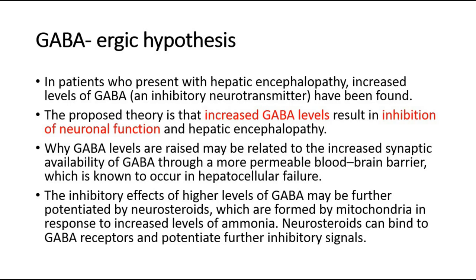Why GABA levels are raised may be related to the increased synaptic availability of GABA through a more permeable blood-brain barrier, which is known to occur in hepatocellular failure. The inhibitory effects of higher levels of GABA may be further potentiated by neurosteroids, which are formed by mitochondria in response to increased levels of ammonia. Neurosteroids can bind to GABA receptors and potentiate further inhibitory signals.